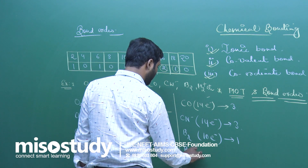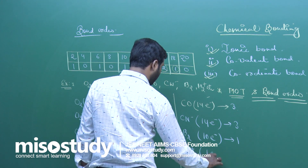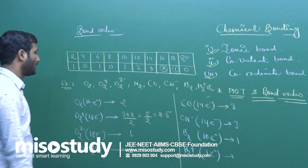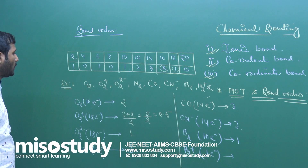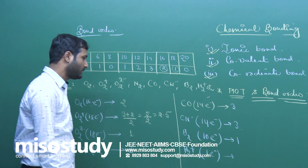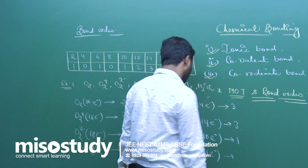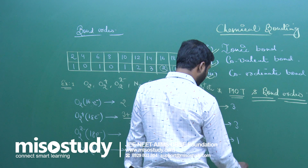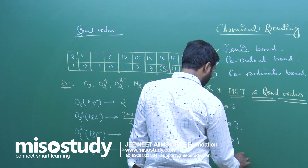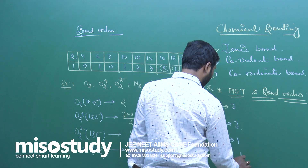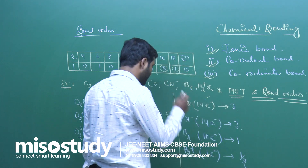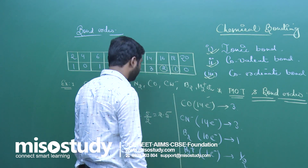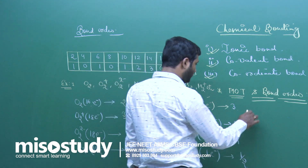H2+ has only 1 electron. In this case: σ1s¹, σ*1s — that is σ1s¹ with NB, so the bond order is 1/2. H2+ has bond order one-half.